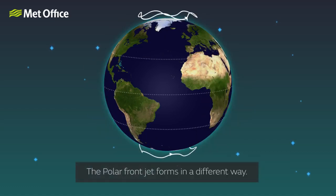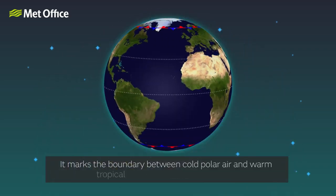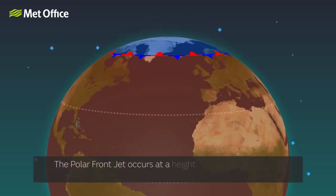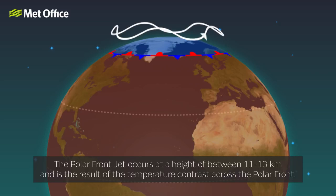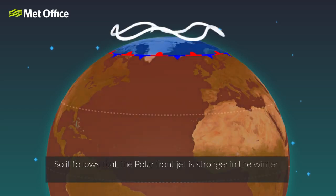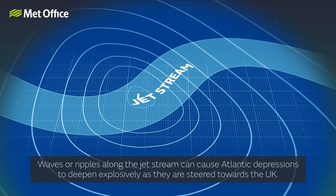The polar front jet forms in a different way. This jet sits between the rising branches of the polar and Ferrell cells, and marks the boundary between cold polar air and warm tropical air, known as the polar front. The polar front jet occurs at a height of 11 to 13 kilometres and is primarily the result of the temperature contrast across the polar front. The stronger the temperature contrast across the front, the stronger the jet. It follows that the polar front jet is stronger in the winter than the summer. Waves or ripples along the jet stream can cause Atlantic depressions to deepen explosively as they are steered towards the UK.